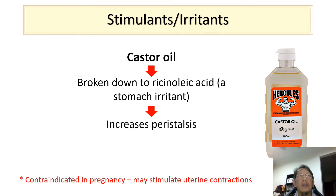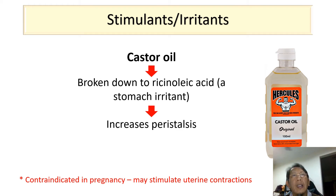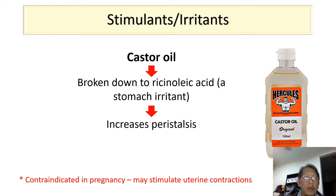The third stimulant is castor oil. This agent is broken down to ricinoleic acid, which is very irritating to the stomach and rapidly increases peristalsis. It is contraindicated in pregnancy because it may stimulate uterine contractions.